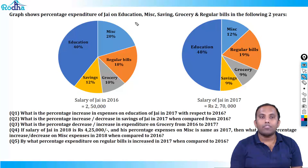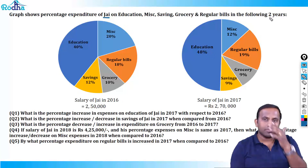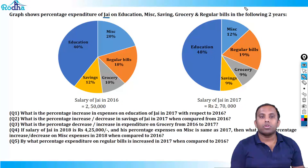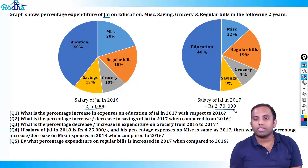This graph shows the percentage expenditure of J on education, miscellaneous, savings, grocery, and regular bills in two years. Regular bills include electricity bill, phone bill, and internet bill. Salary of J in 2016 is 2,50,000 and salary of J in 2017 is 2,70,000.